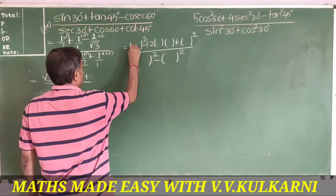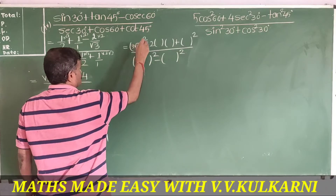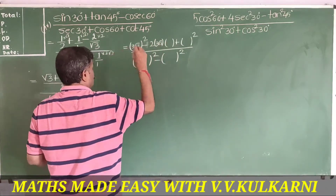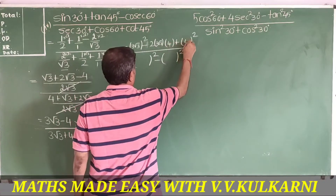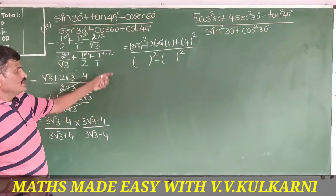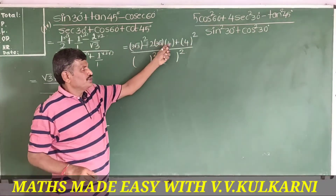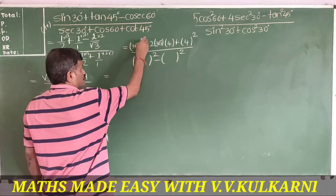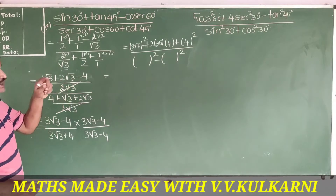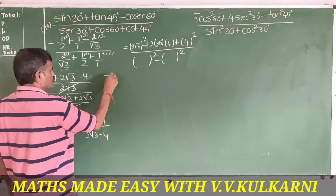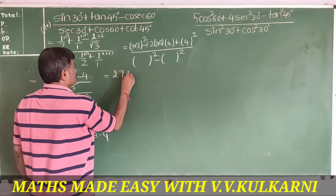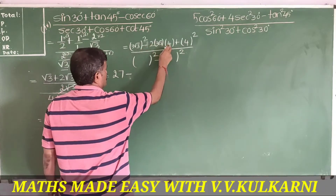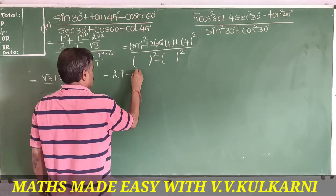In the numerator: (3√3)² minus 2 into 3√3 into 4 plus 4². So 3√3 squared is 9 into 3 which is 27, minus 2 into 3√3 into 4 gives 24√3, and 4 squared is 16.